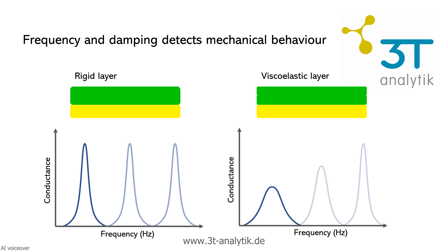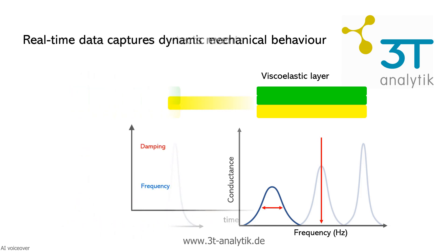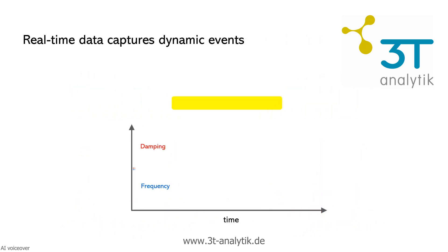QCMD measures two key quantities: frequency, which reflects added mass, and energy dissipation, which reveals mechanical properties. Together, they offer a real-time look into how a material behaves on the surface.